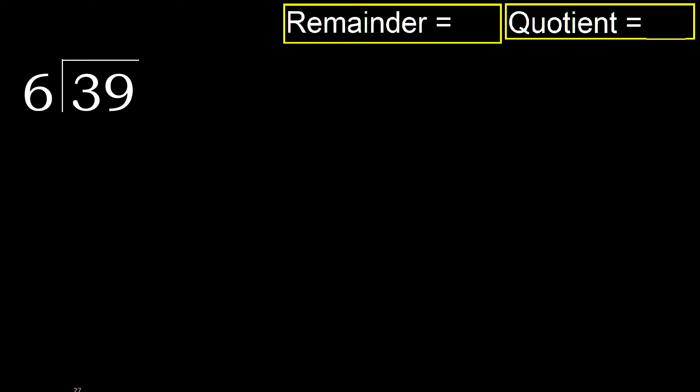39 divided by 6. 3 is less, therefore next. 39 — 39 is not less, therefore with 39.